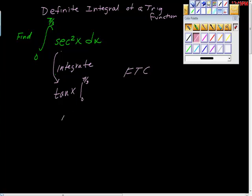We're going to take f of b minus f of a. There's the fundamental theorem of calculus. f of b being pi thirds, f of a being zero, that is f of zero, f of pi thirds.